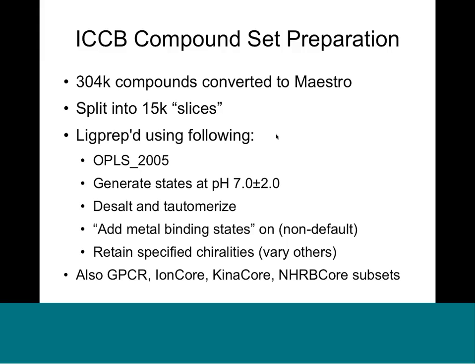In addition to the 304,000 compounds that we obtained from ICCB — their complete set — they also provided us some specialized subsets. Most of these are about 250 to 300 compounds. You can see them listed for GPCRs, ion channels, and some other sets. If you have more questions about the details of what their sets actually entail, you can either contact us or contact them and they should be able to provide that information.